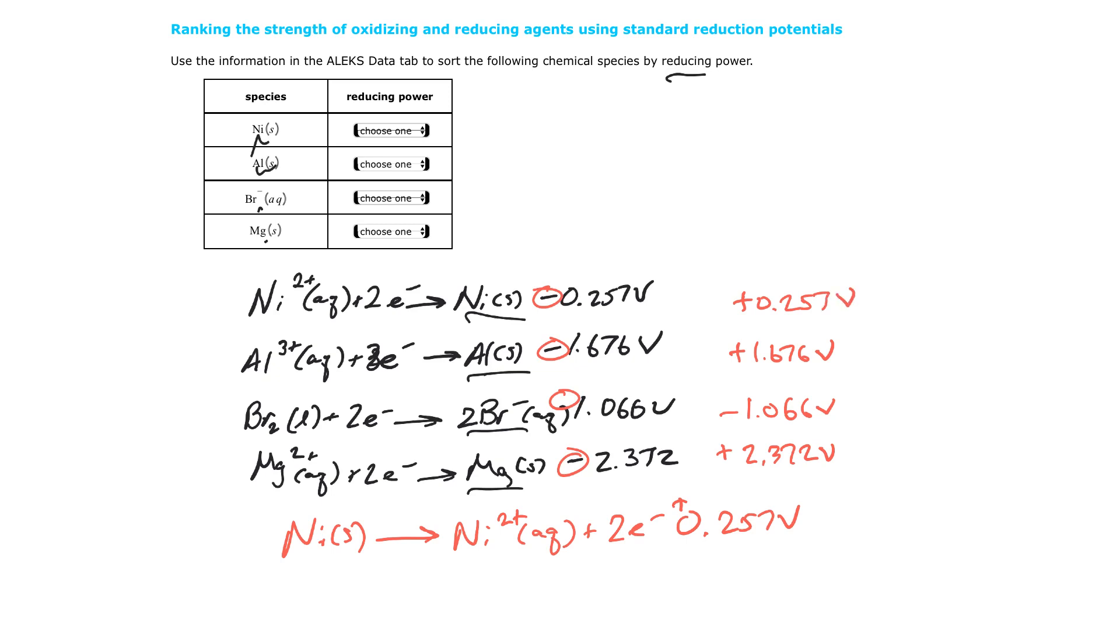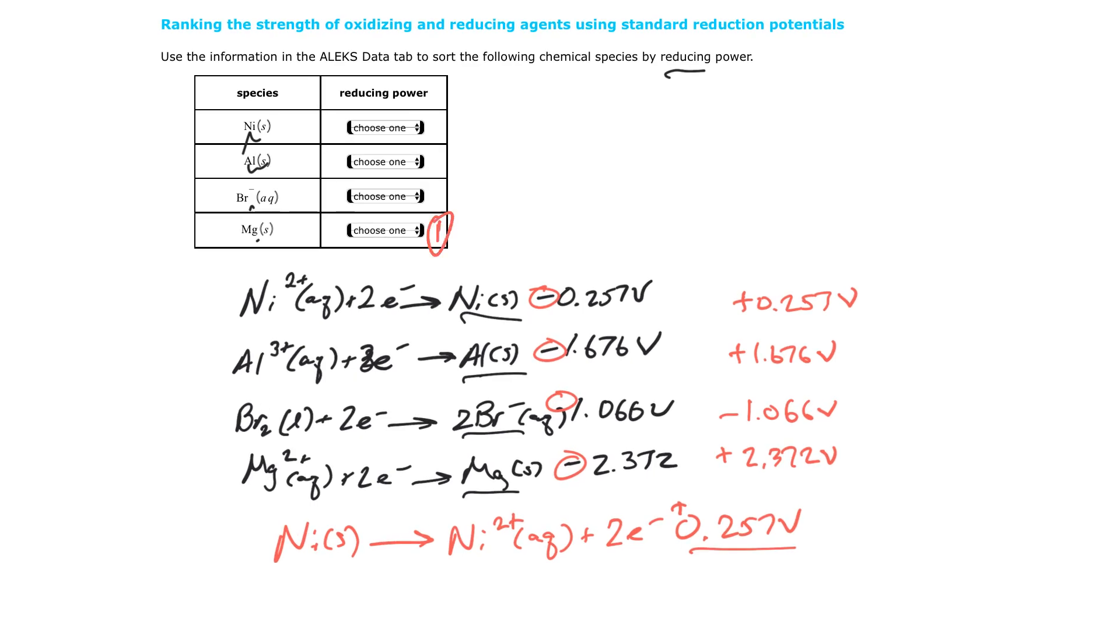Now, the higher that this number is, the more volts it is, the easier it is to give away an electron. So nickel at 0.257 can't give away an electron as easy as magnesium. Magnesium has a much higher number. Magnesium is the highest number in this series. So magnesium is going to be the one that gives it away the most. It's going to be the easiest to reduce something else.